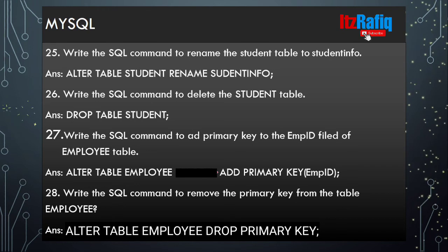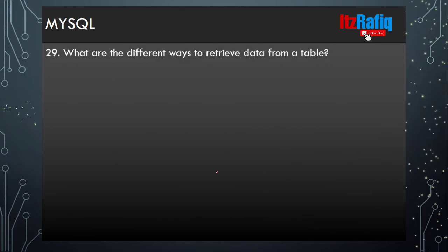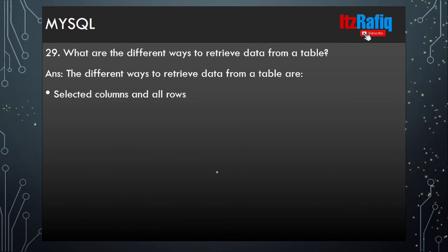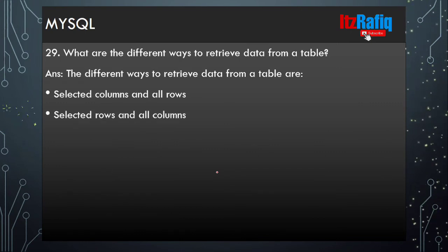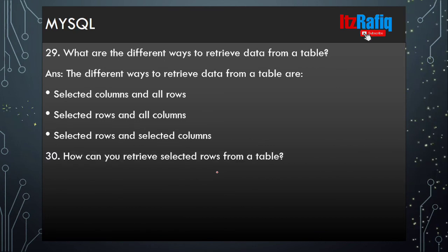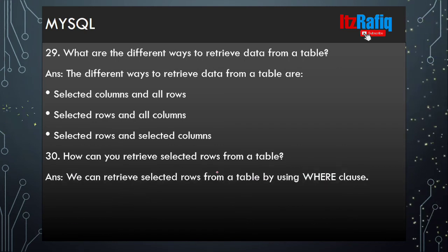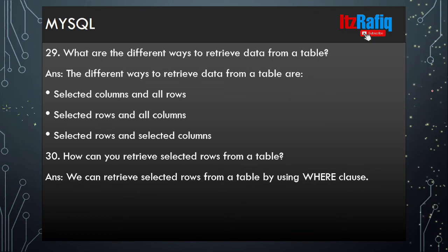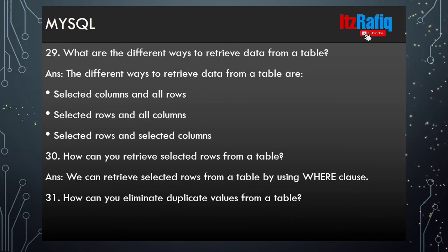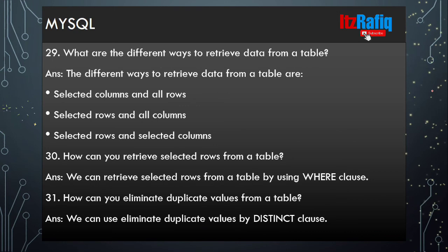What are the different ways to retrieve data from a table? The different ways are: selected columns and all rows, selected rows and all columns, and selected rows and selected columns. How can you retrieve selected rows from a table? We can retrieve selected rows by using the WHERE clause. How can you eliminate duplicate values from a table? We can eliminate duplicate values by using the DISTINCT clause.